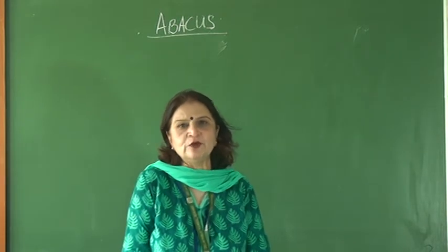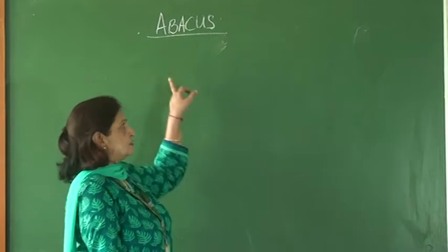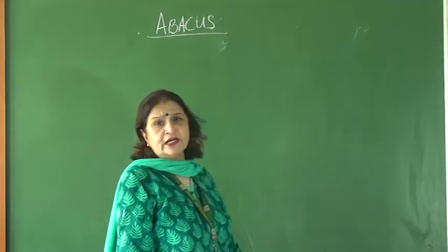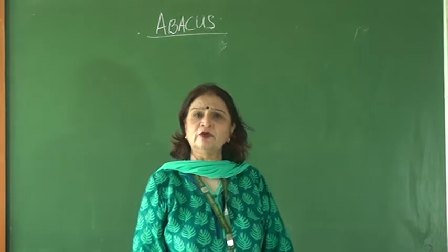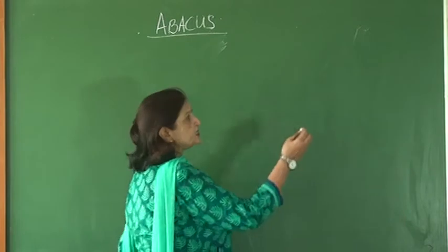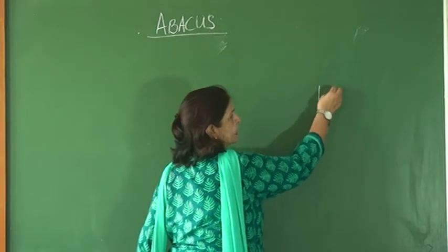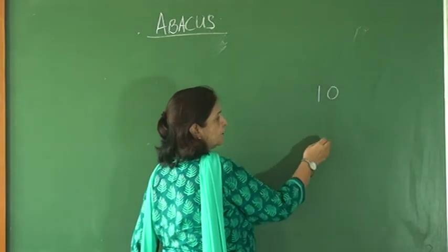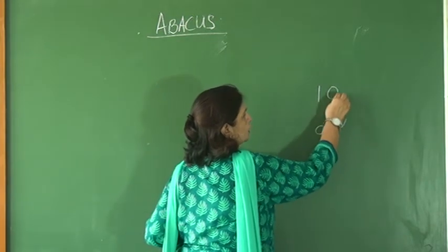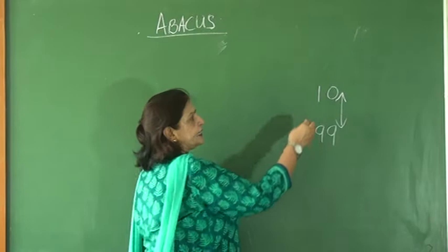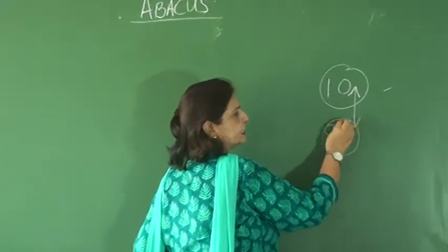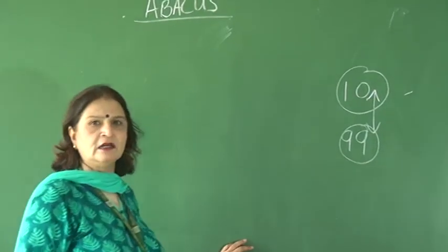Today I am here to explain you the abacus. The abacus is a new topic for you. Children, you are in class 1, so you will learn only 2-digit numbers. What are 2-digit numbers? Numbers after 9. After 9 is 10, and before 100 is 99. These numbers are called 2-digit numbers. 10 is the smallest 2-digit number and 99 is the biggest 2-digit number.